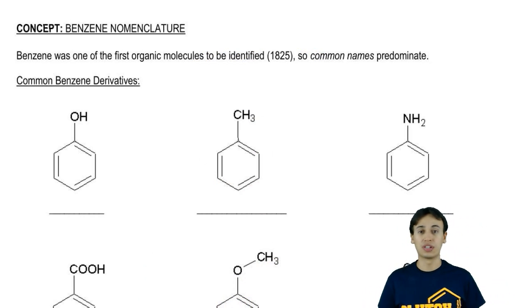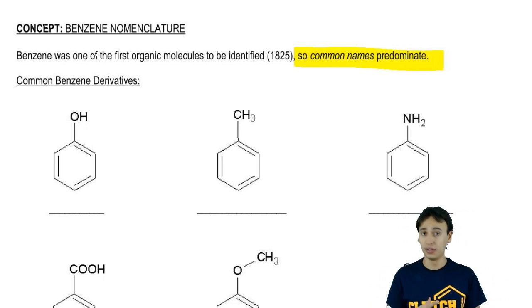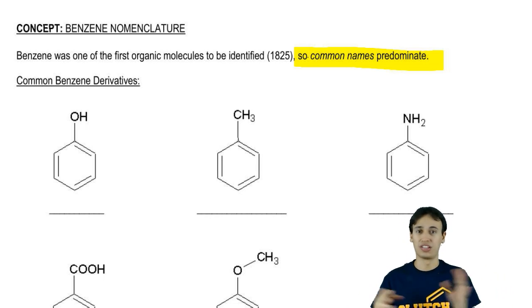Benzene was one of the first organic molecules to be identified way back in the early 1800s. So what we find is that when we're naming these guys, common names predominate, meaning that there's IUPAC and there's common. A lot of common names are based on just weird Greek roots, Latin roots, people's girlfriends, naming them after their wives and stuff. It's weird. So most of these names are going to make sense, thankfully, but there are going to be some weird names that you don't have a really great way to understand where those names come from.